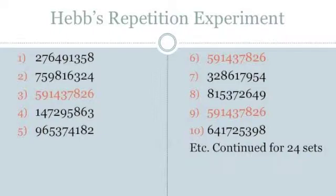In Hebb's original experiment, a researcher verbally presented a set of nine digits to a subject and asked the subject to repeat the digits back in the same order. During the presentation of 24 sets of digits, every third trial repeated the same nine digits. Hebb assumed that with each new stimulus — a new set of nine digits — the previous set would be wiped clean and there would be no cumulative learning. The subjects proved Hebb wrong, as the majority of them learned the repeated sequence, remembering it at the end of the experiment regardless of whether they had noticed the regular repetition or not.